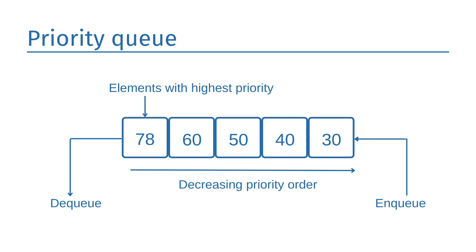In the descending priority queue, elements can be inserted in arbitrary order but only the largest element can be deleted first. Suppose an array with elements 78, 60, 50, 40, and 30 in the same order. Insertion can be done in the same sequence, but the order of deleting the elements is 78, 60, 50, 40, 30 — the reverse of ascending order.